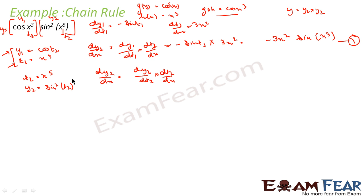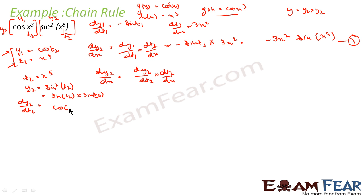The first thing is to find dy2/dt2. Since y2 = sin²(t2), I write this as sin(t2) · sin(t2). I can use the product rule here. Taking the derivative of the first part gives cos(t2), multiplied by the second part sin(t2), plus the first part sin(t2) multiplied by the derivative of the second part, which is cos(t2).